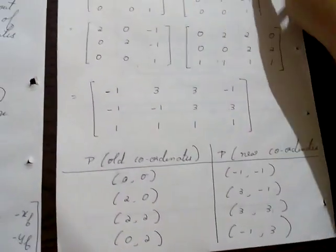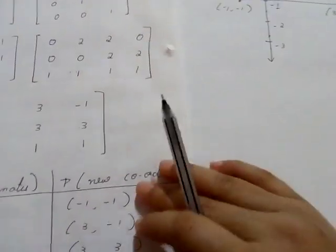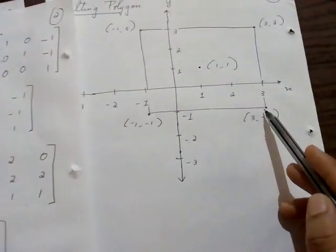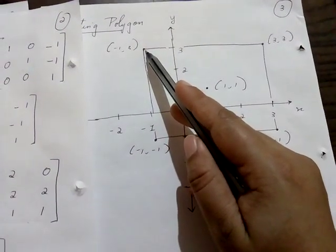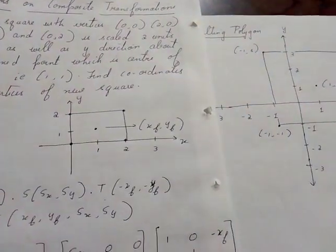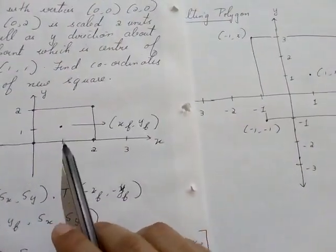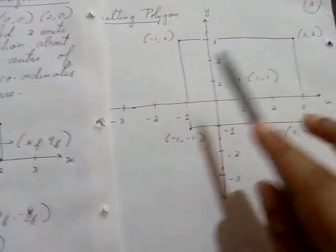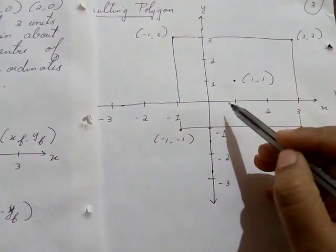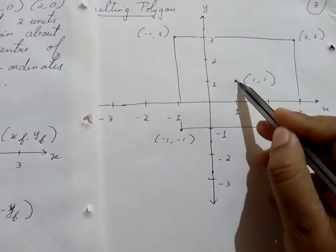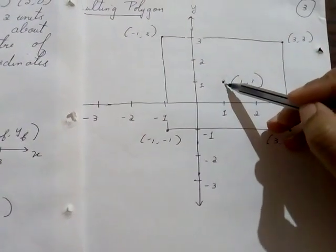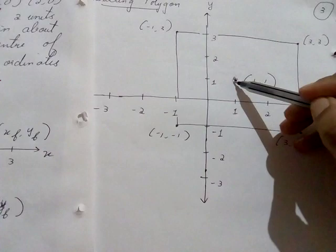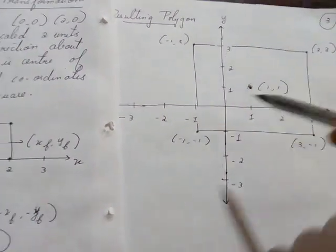Let us plot these new coordinates onto the graph. After plotting, the new square looks like this. The first point is (-1,-1), second is (3,-1), third is (3,3), and the fourth is (-1,3). You can see that the previous object was smaller, and the new object has increased in size. When you look at this object, the point (1,1) is exactly at the center. That means in spite of increasing the size, the fixed point has remained intact — (1,1) is still at the center. You have to put the resultant graph after performing this problem.